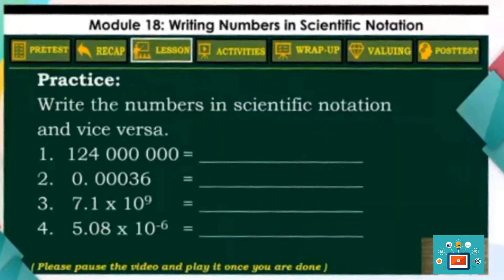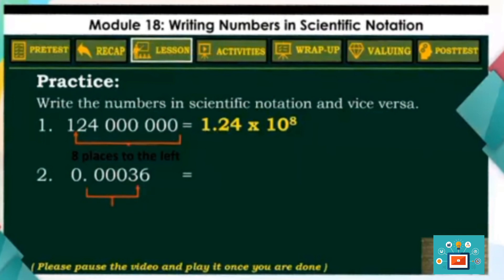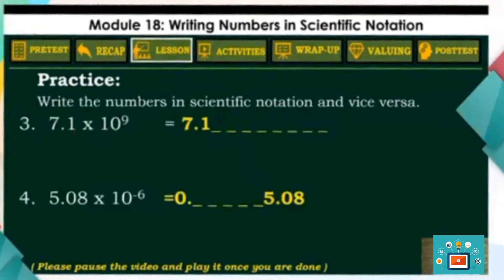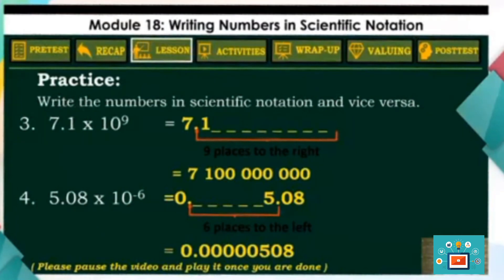Now it's your turn. Write the numbers in scientific notation and vice versa. You may pause the video while answering and play it once you are done. Let us now do the checking. For number 1, move the decimal point 8 places to the left, which equals 1.24 times 10 to the 8th power. For number 2, move the decimal point 4 places to the right, which equals 3.6 times 10 to the negative 4. For number 3, move the decimal point 9 places to the right, which equals 7,100,000,000,000. For number 4, move the decimal point 6 places to the left, which equals 508,100,000,000,000.